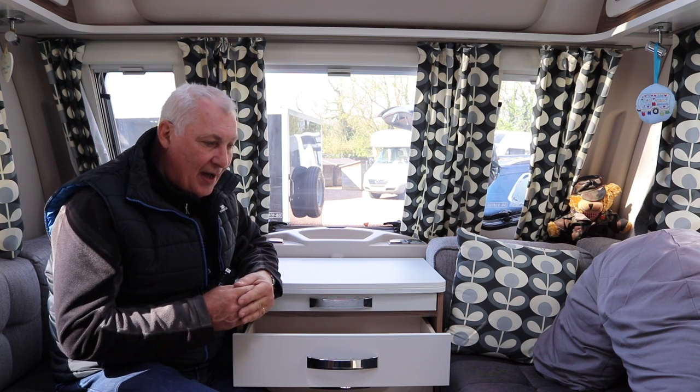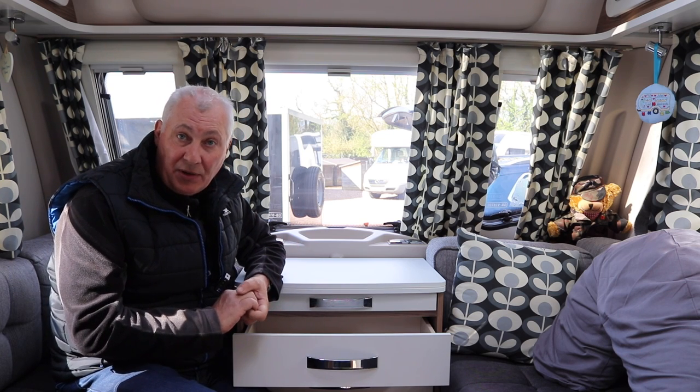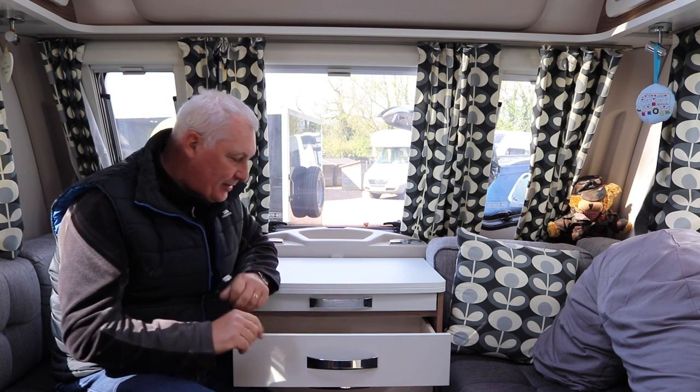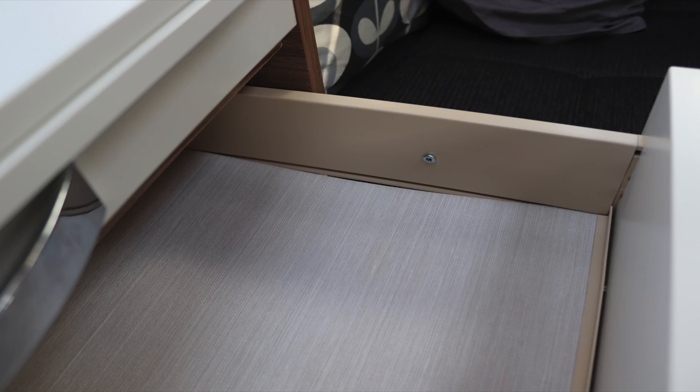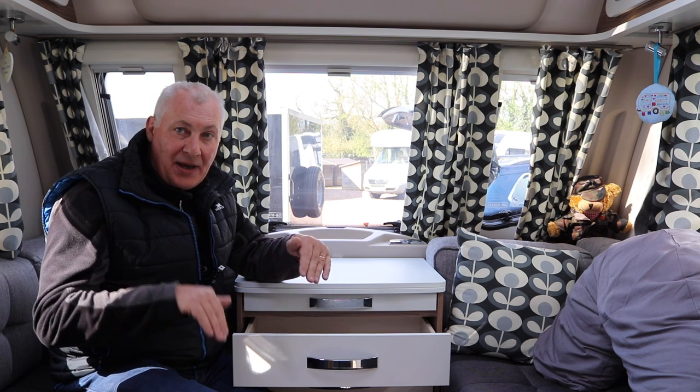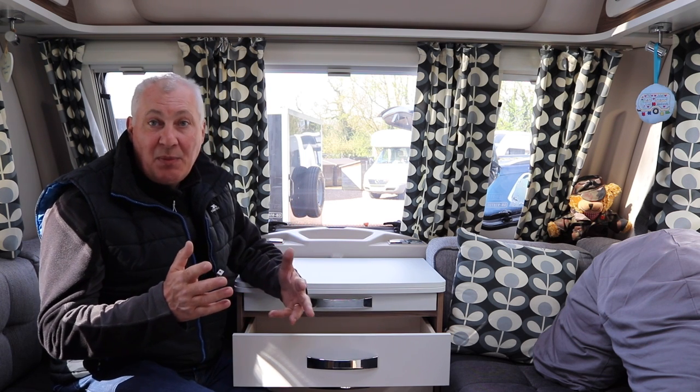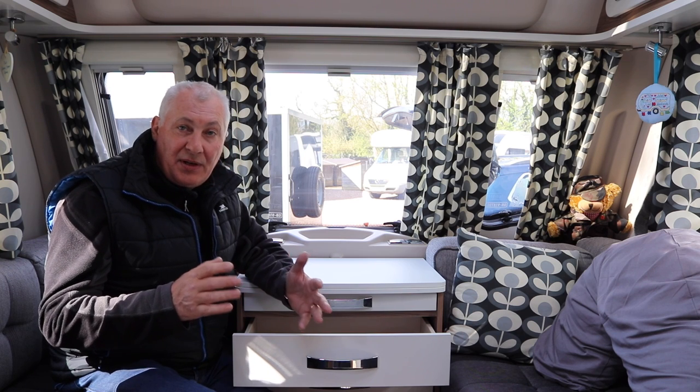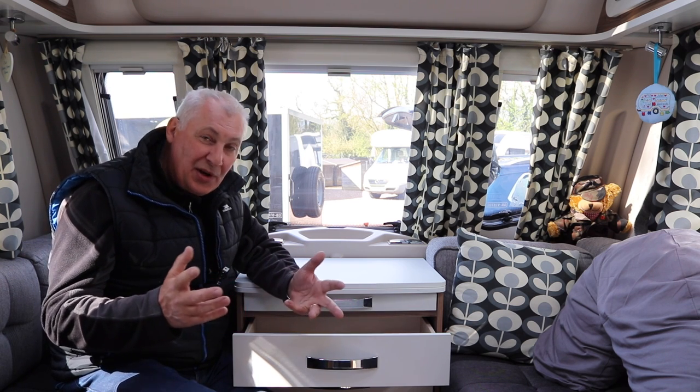So last weekend we were away in the caravan and we noticed that we had a soggy bottom drawer. That is, it's this top drawer. It started to actually sag because the sidewalls are coming away slightly and the base is dropping. This might be due to Julia or myself putting slightly heavier things in the drawer.